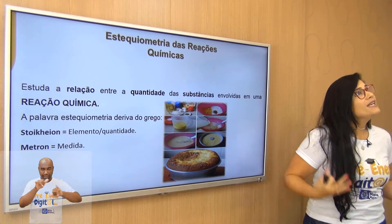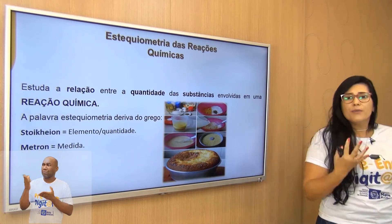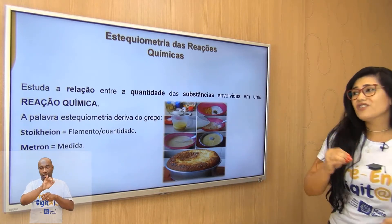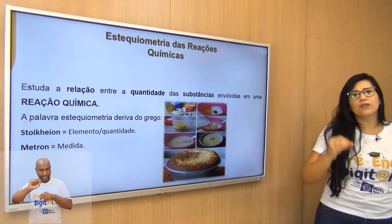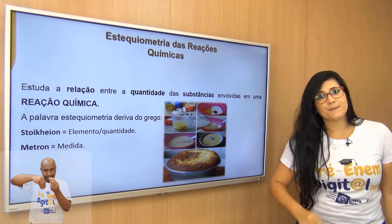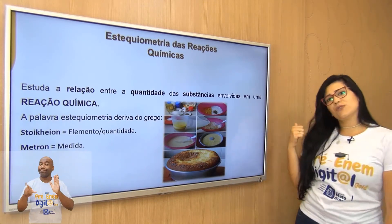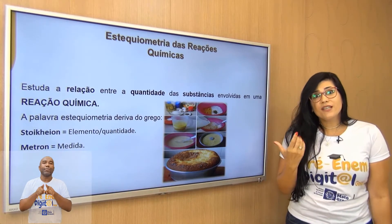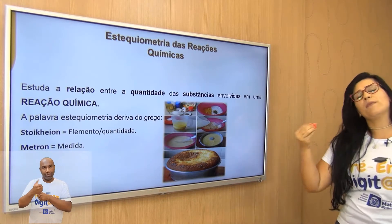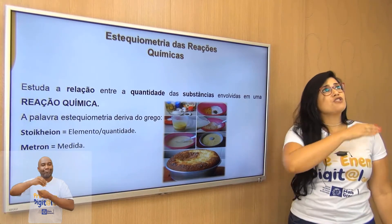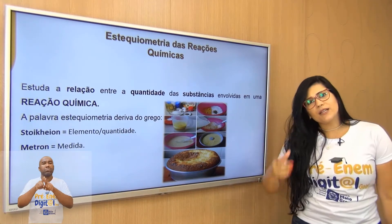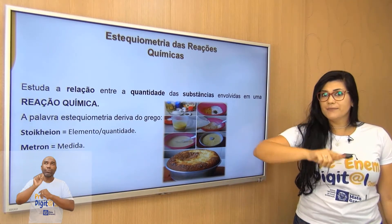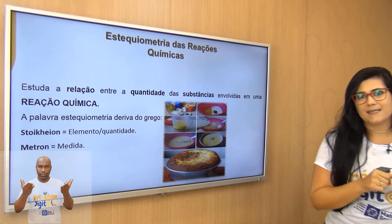Mas o que isso vai estudar? E por que isso é tão importante para a gente ver agora, se preparando para o Enem? Pessoal, praticamente em todo ano cai no Enem Estequiometria das Reações Químicas. Tanto é que eu coloquei aqui na nossa aula de hoje uma questão de 2019 que cobrou Estequiometria de Reação. Fora que em vestibulares do Brasil inteiro também é cobrado, e em vestibulares de medicina aqui em Mato Grosso. Então fica a dica e vamos comigo até o final.